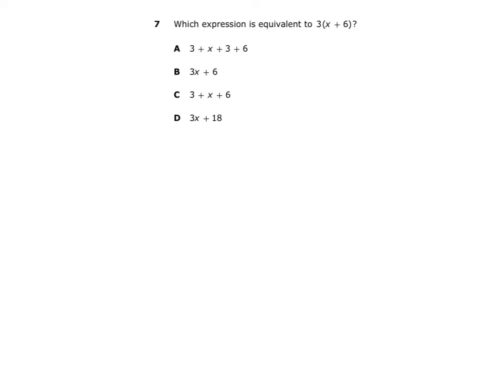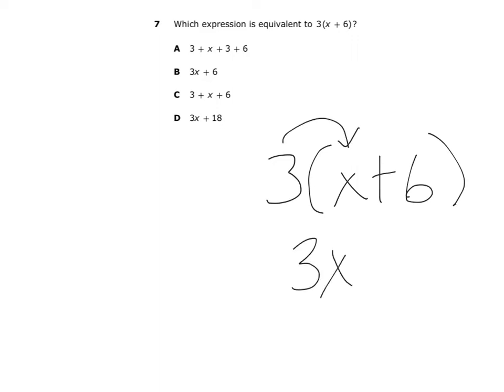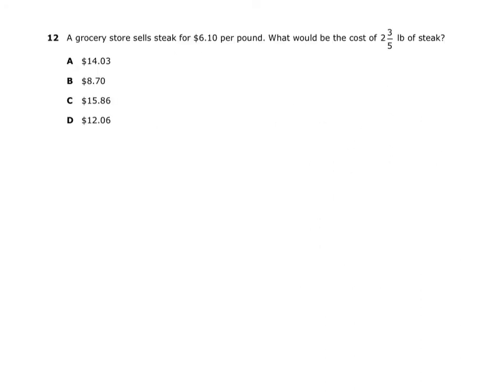One quick reminder about the word 'equivalent' and what parentheses can also mean. Equivalent means equal to. The parentheses in this problem means to use the distributive property — to multiply everything inside. So I would multiply 3 times X, which gives 3X, and then 3 times 6, which gives 18, resulting in the answer D.